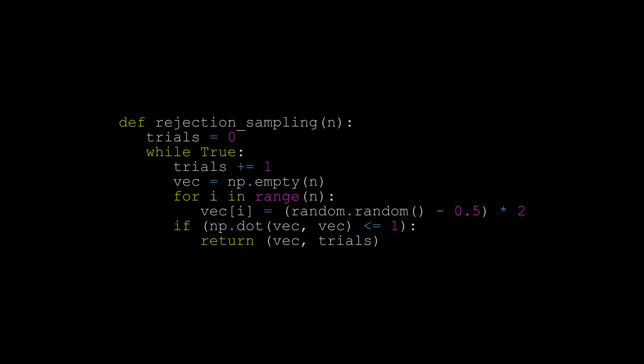Here's my code. It first enters an infinite loop so we can repeat the selection process until we get a valid point. For each trial, we generate an array with n entries and initialize each entry with a uniform random number between negative 1 and 1. Since the dot product of a vector with itself is the square of its length, we can use NumPy's dot function to check whether the point is in the ball, and if it is, we return the point. We also track the number of trials it takes and return it along with the vector.